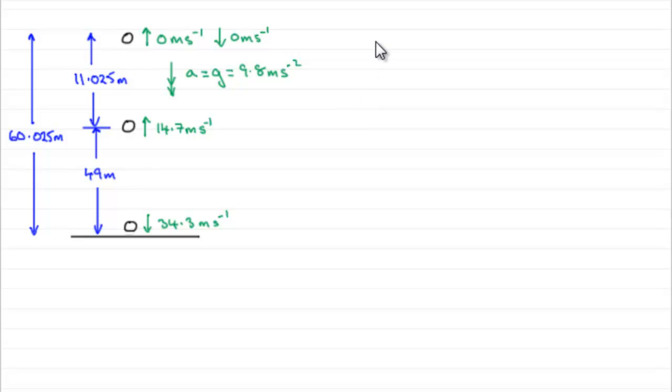What we need to do is set up our SUVAT equations again as normal, so we'll just put those down: S, U, V, A, and T. But what we're going to do is consider the motion from the start here when T is zero all the way through to this value down here.